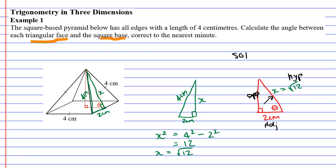Now, looking at SOHCAHTOA, hypotenuse and adjacent is in the middle. So we're using cos. So cos theta equals adjacent over hypotenuse. Adjacent is 2 and our hypotenuse is root 12.